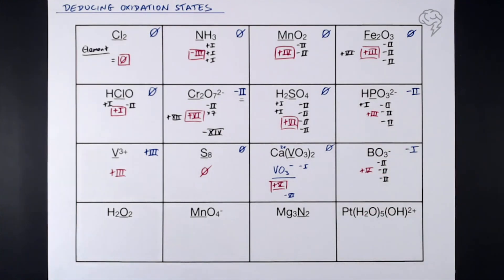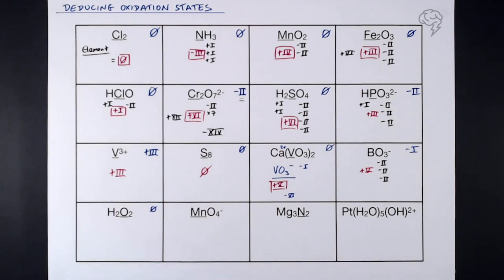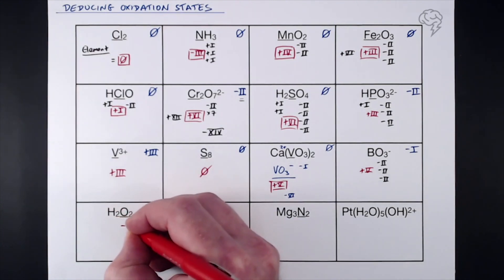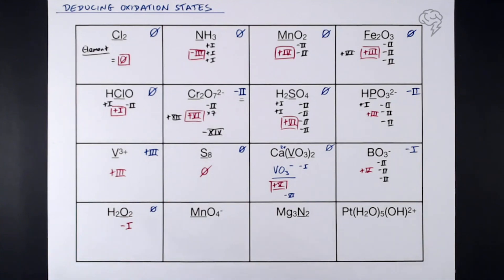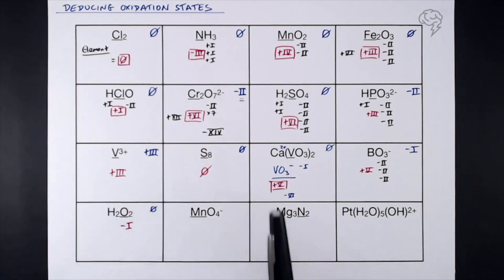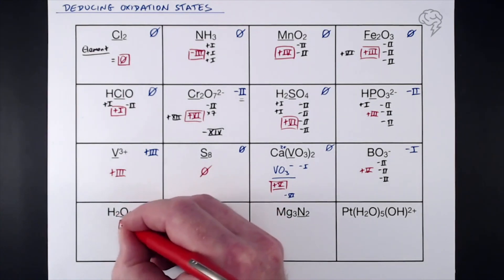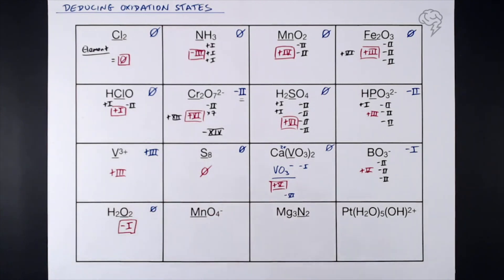H₂O₂ — overall oxidation state zero. This is an exception to the rule: when oxygen is in a peroxide molecule it doesn't have an oxidation state of −2; it's actually −1. The reason is that if you try two lots of −2 and two lots of +1, they don't balance — so it's the oxygen that gives, yielding a −1 oxidation state.